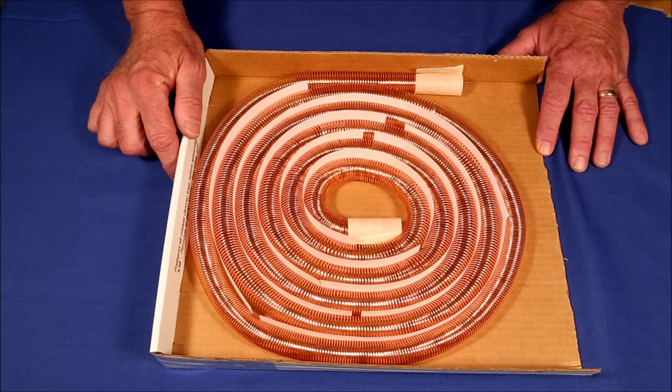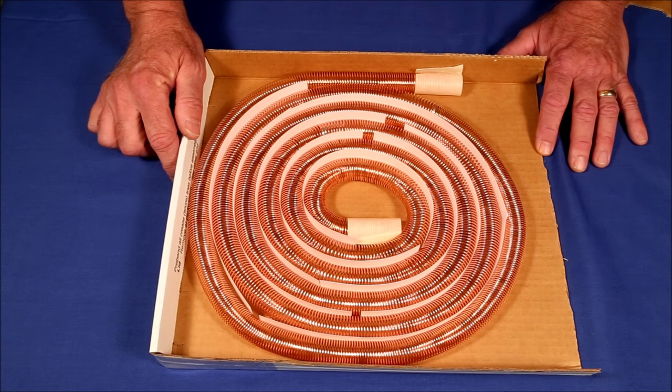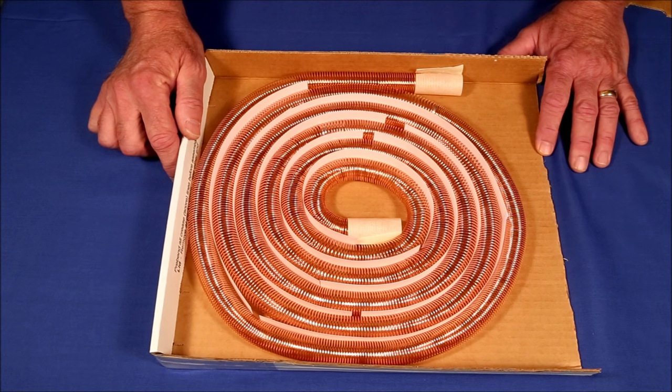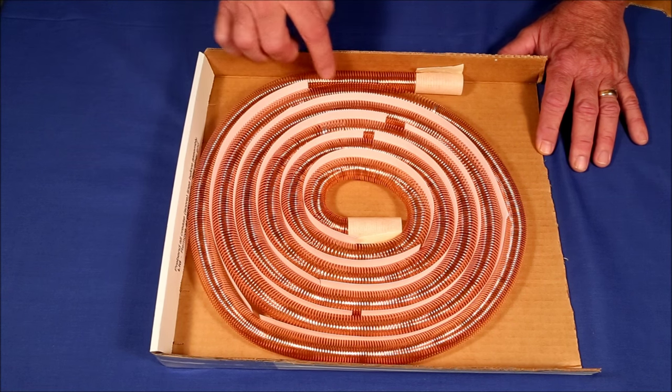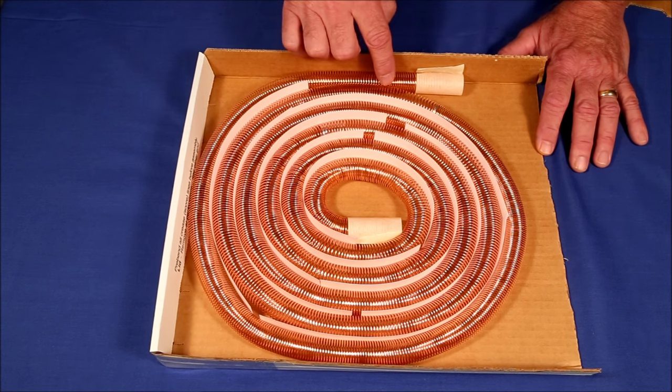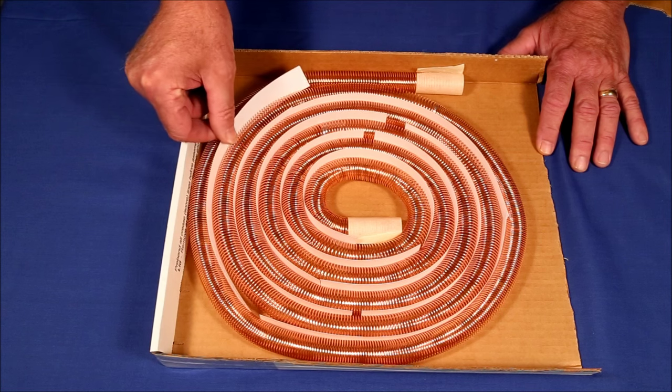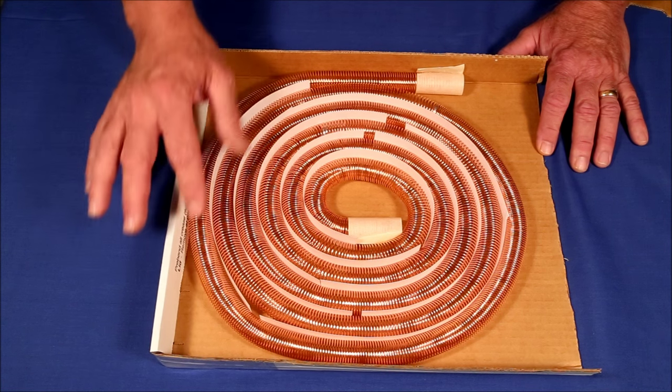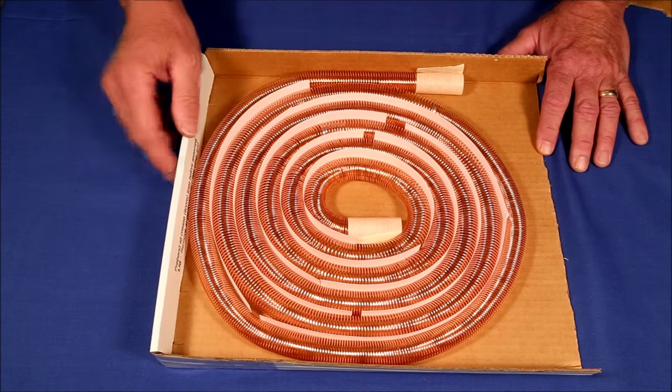If you've ever tried to untangle a tangled slinky, you know what a nightmare that can be. So to prevent the loops from locking up together, I use pieces of poster board cut into thin strips to keep the two layers separate.